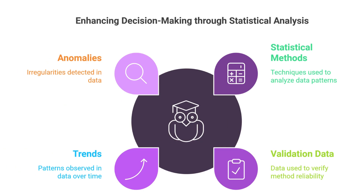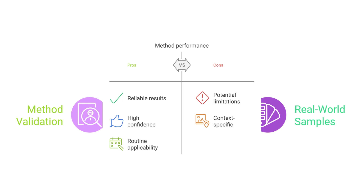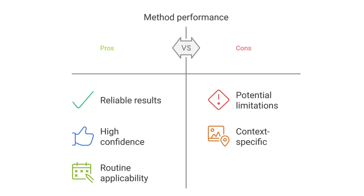Tip 7: Use statistical analysis. Utilize statistical methods to analyze validation data. This helps in determining the reliability of the method and provides a quantitative basis for decision making. Statistical tools can also assist in identifying trends and anomalies in the data. Tip 8: Validate in real-world conditions. Whenever possible, validate the method using real-world samples. This ensures that the method performs well under actual conditions and provides confidence in its applicability to routine analysis.